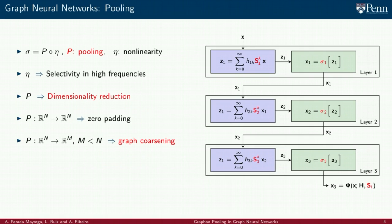Alternatively, p can perform sampling to reduce the size of the vectors and graph coarsening to reduce the size of the graphs accordingly.